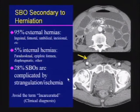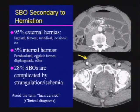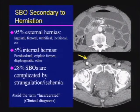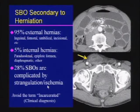A word about small bowel obstruction secondary to hernia: external hernias are the most common cause, with internal hernias making up a smaller percentage, although you should be familiar with the appearance of a paraduodenal hernia and other rare hernias such as the epiploic foramen hernia. We see obvious dilatation involving the right inguinal canal. Try to avoid using the term incarceration on your reports, as this is a clinical diagnosis based on whether the physician can reduce the hernia sac.